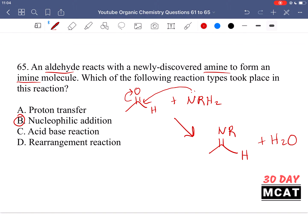So B is correct. We're asked for the reaction type and B is correct. It's a nucleophilic addition. Option C is incorrect. It's not an acid base reaction. An amine can be a base, but there is no acid really present here. Option D is incorrect. It's not a type of rearrangement reaction.